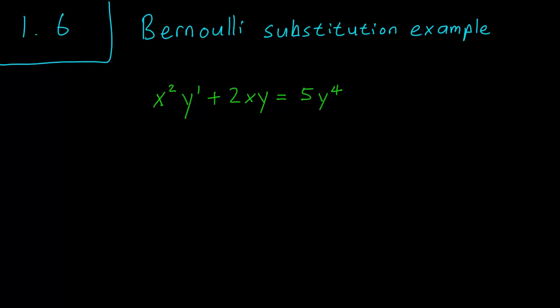Hello class, this is chapter 1.6, and in this video we are going to work through a Bernoulli substitution example. This is our differential equation, and we can recognize that this is a Bernoulli equation by the fourth power over here and the linear term over there. The first thing we have to do is to isolate the derivative term, so let's divide both sides by x squared.